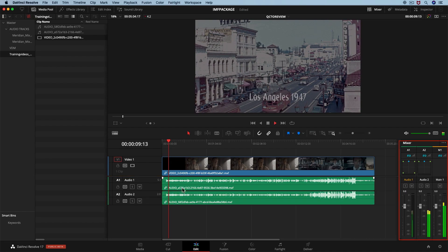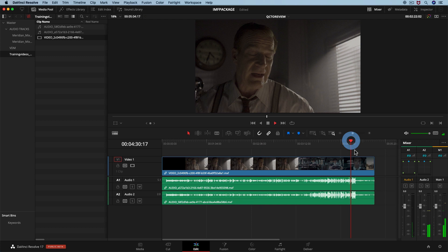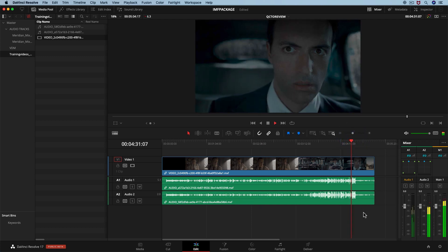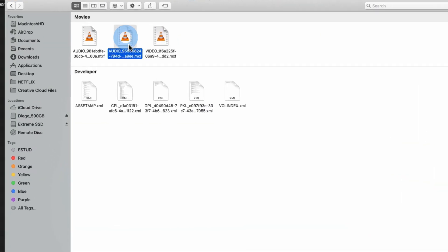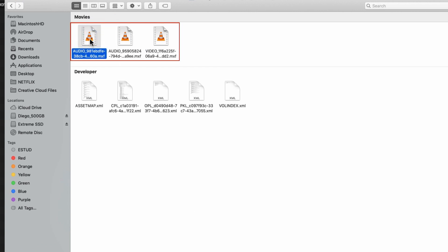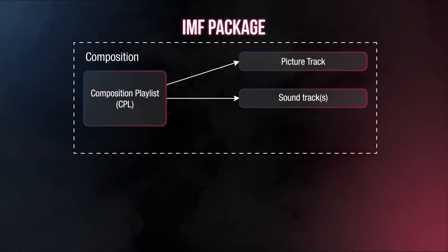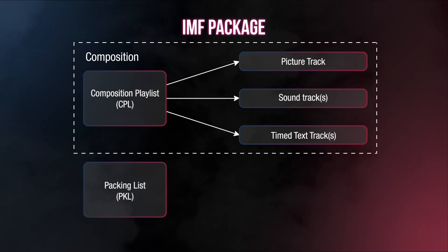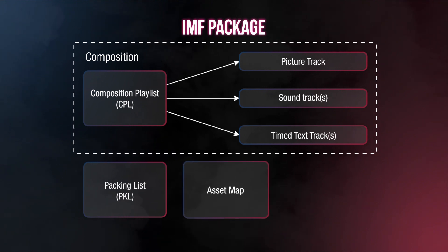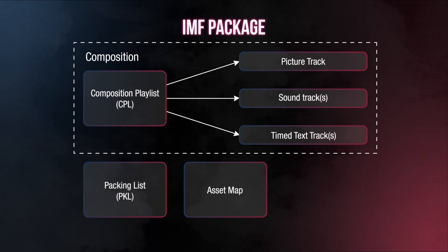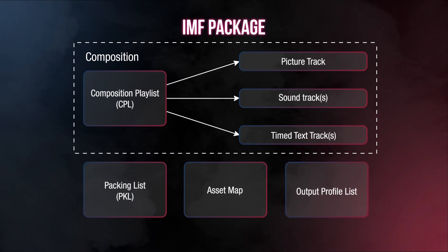On the edit page, verify that we have a 5.1 and a stereo mix and that video is in sync with audio. Do a spot check at the beginning, middle, and end of the timeline. Then open the file in the Finder to review all components: three MXF files carrying the video, 5.1 audio, and 2.0 audio track; a CPL that assembles the MXF files on the timeline; a PKL that is an index of all assets within the IMF package; and an asset map that maps IMF internal UUIDs to external file names.